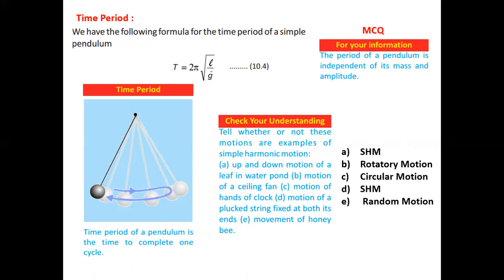Mini exercise: tell whether or not these motions are examples of simple harmonic motion. (a) Up and down motion of a leaf in a water pond — this is simple harmonic motion as it moves about a mean position. (b) Motion of a ceiling fan — not simple harmonic motion, it is rotatory motion. (c) Motion of the hands of a clock — circular motion, not SHM. (d) Motion of a plucked string fixed at both ends — it vibrates about a mean position, so it is simple harmonic motion. (e) Movement of a honeybee — random motion, not SHM.